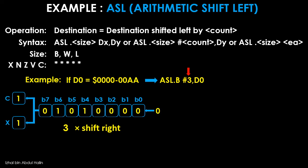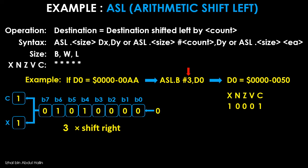The 32-bit hexadecimal value in D0 is now 0x00000050. The status register is 10000001. X and C are both 1 because a 1 was shifted into both of them at the final shifting process. The N flag is 0 because 50 is a positive 8-bit signed number. Z is 0 because the result is non-zero. The overflow flag V is 0 because no overflow occurred during the shift operation.